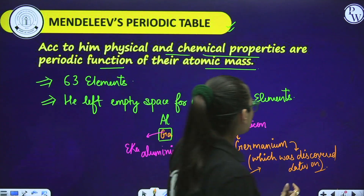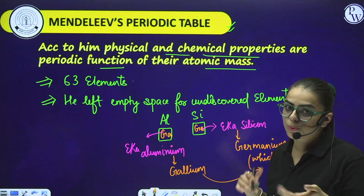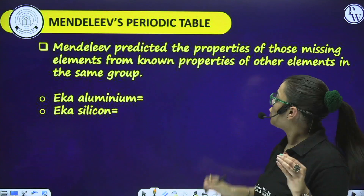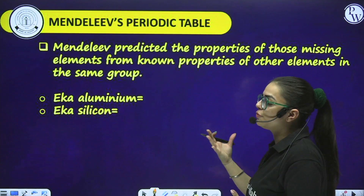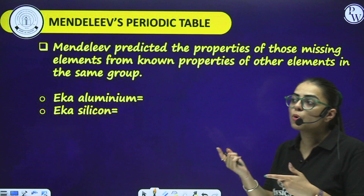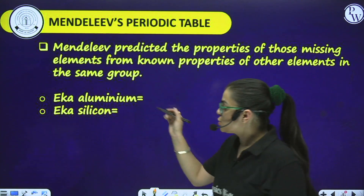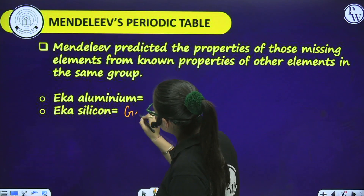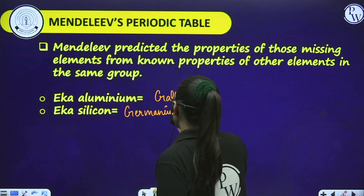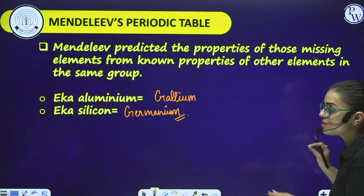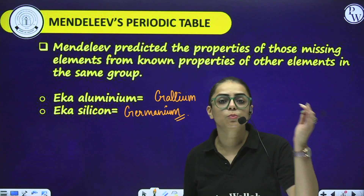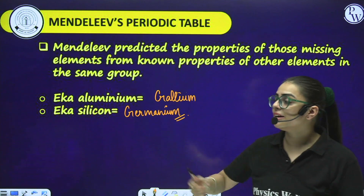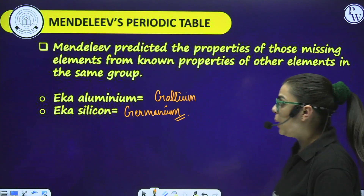So this we were studying. Also, inert gases were not placed in the periodic table yet. Mendeleev predicted the properties of missing elements from the properties of other elements in the same group. He knew the property of Aluminium, so he said the upcoming element's property would be quite similar - he referred to it as Eka-Aluminium, which is Gallium. And Eka-Silicon, which is Germanium. Please make notes side by side - you can pause the video to write, as it is really essential.